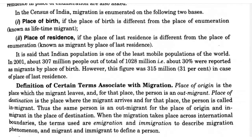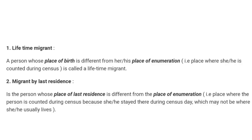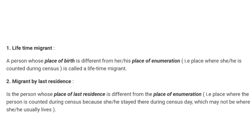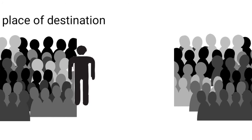Census enumeration in India is based on two criteria: place of birth and place of residence. If the place of birth is different from the place of enumeration, the person is known as a lifetime migrant. If the place of last residence is different from the place of enumeration, the person is known as a migrant by place of last residence. To make it simple: a lifetime migrant is a person whose place of birth differs from where they were counted during the census; a migrant by last residence is a person whose last place of residence differs from the place of enumeration on census day.